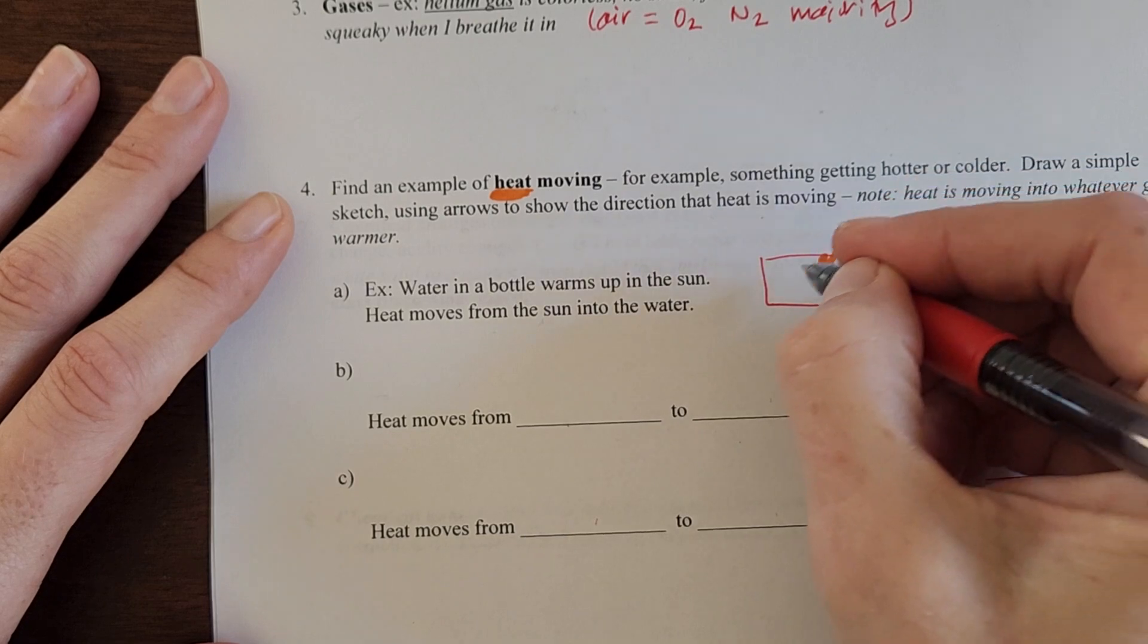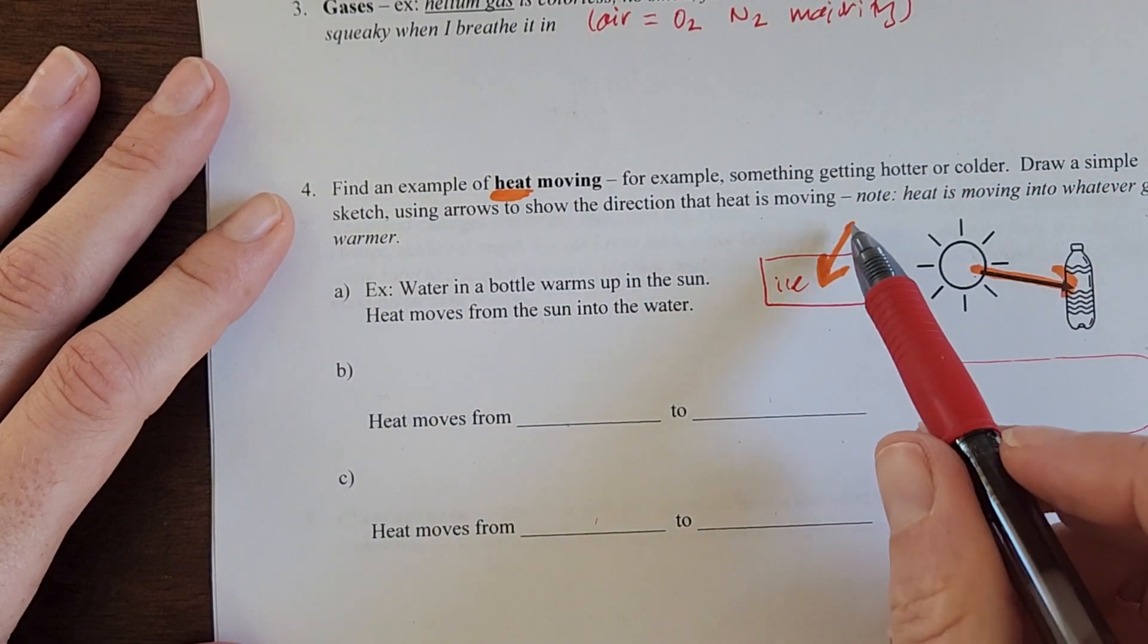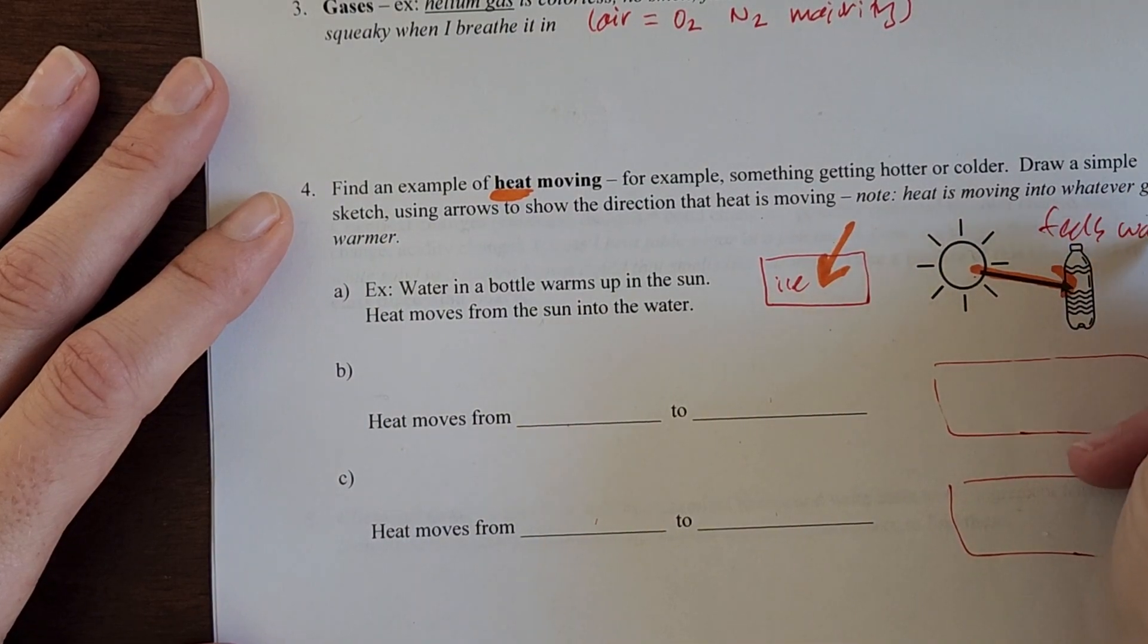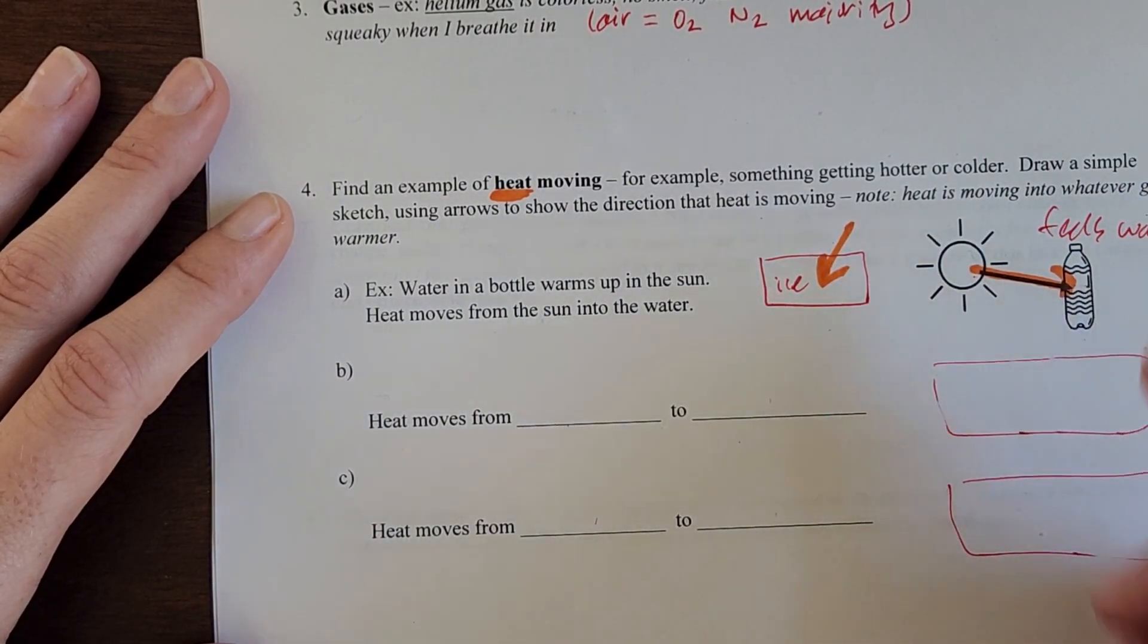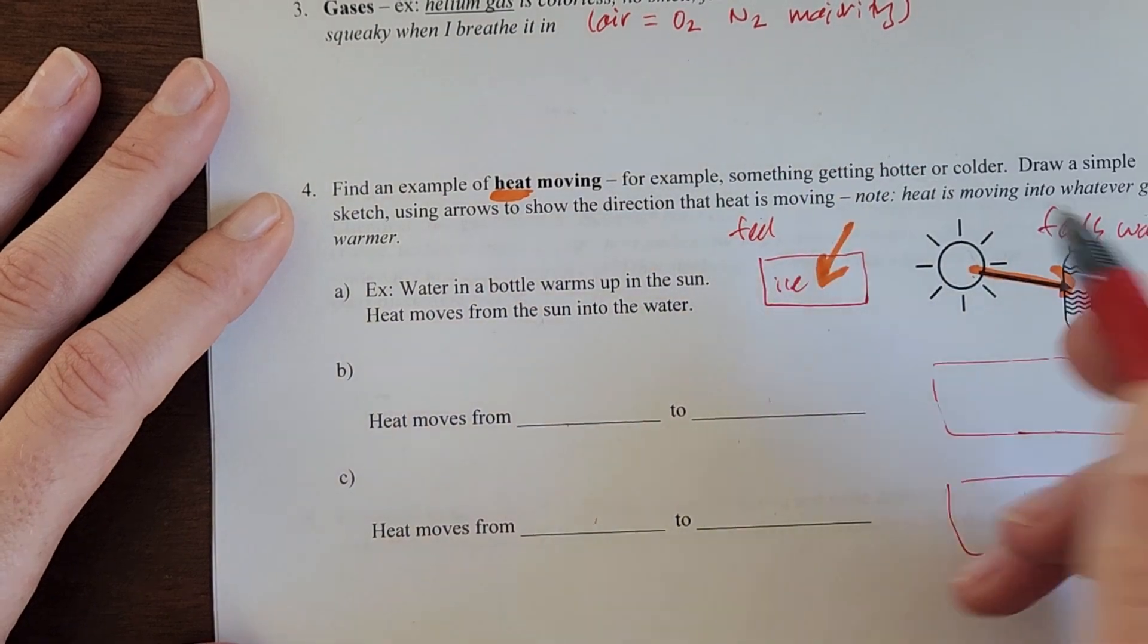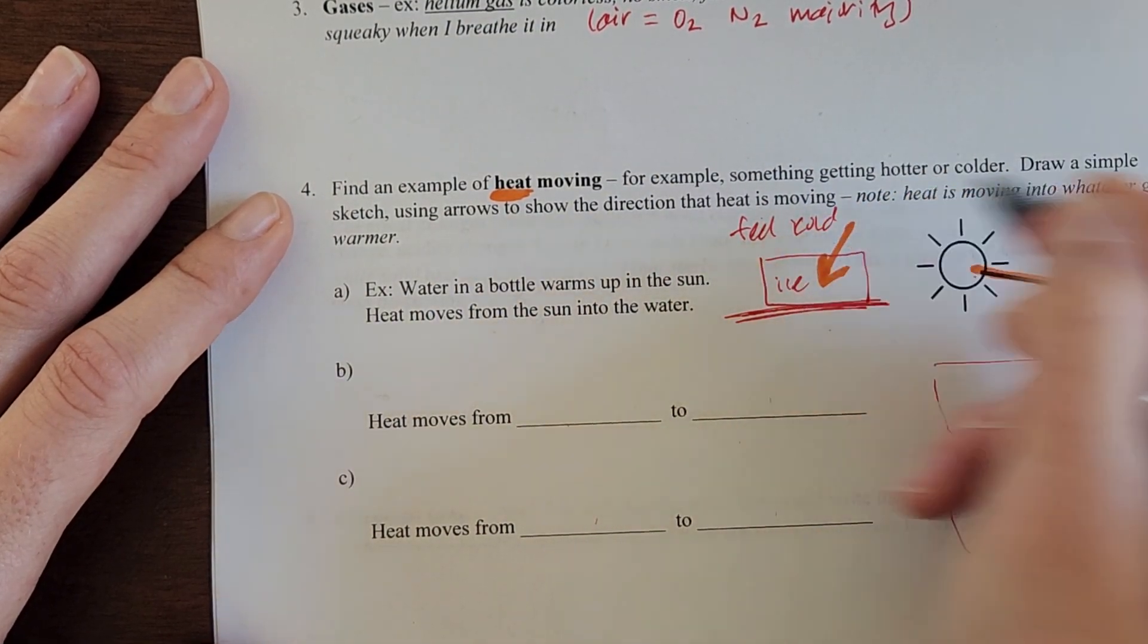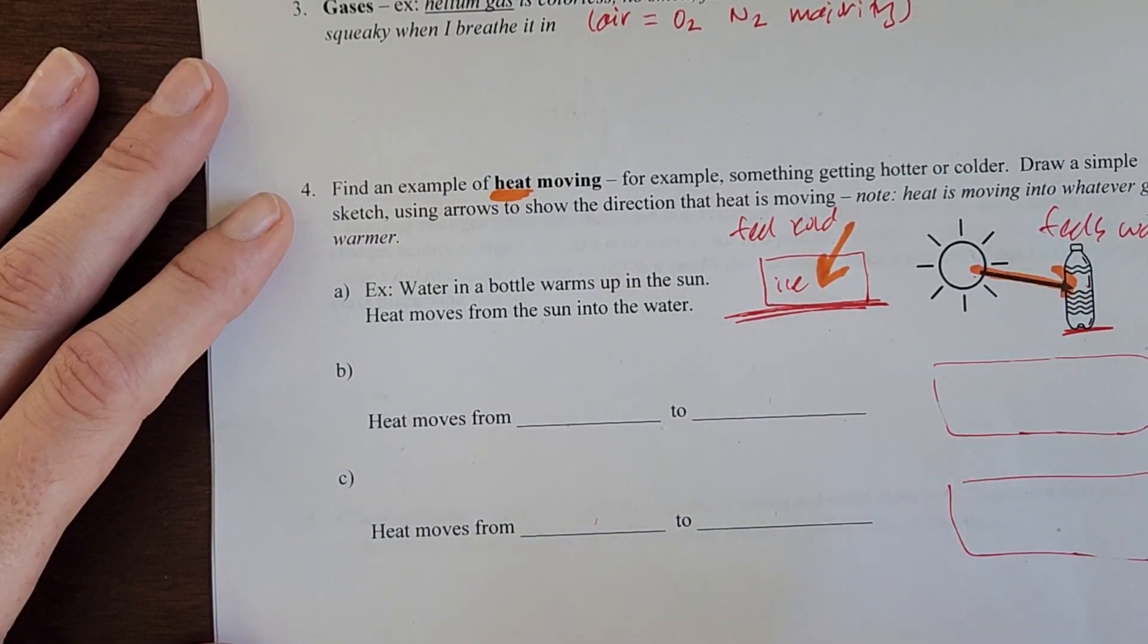If this is my ice, it feels cold because it's sucking heat in. So this is a process where we're feeling warm. If I'm holding the ice I'm feeling cold, if I'm holding this water bottle I'm feeling warm. So that kind of can help you think about where the heat is moving.